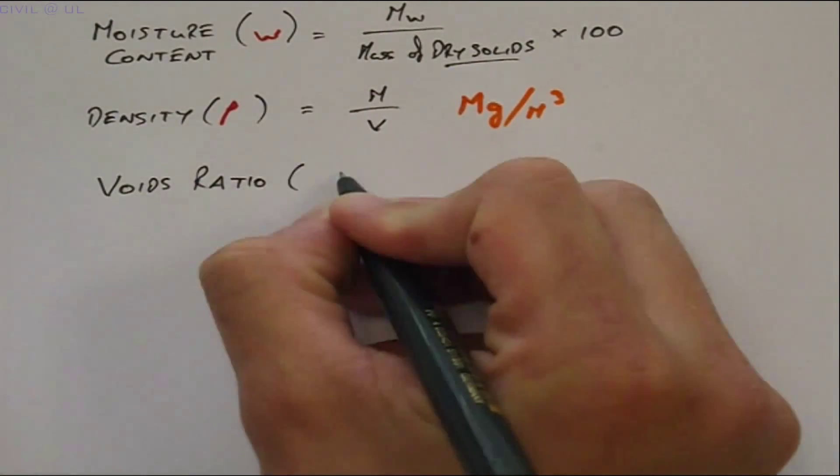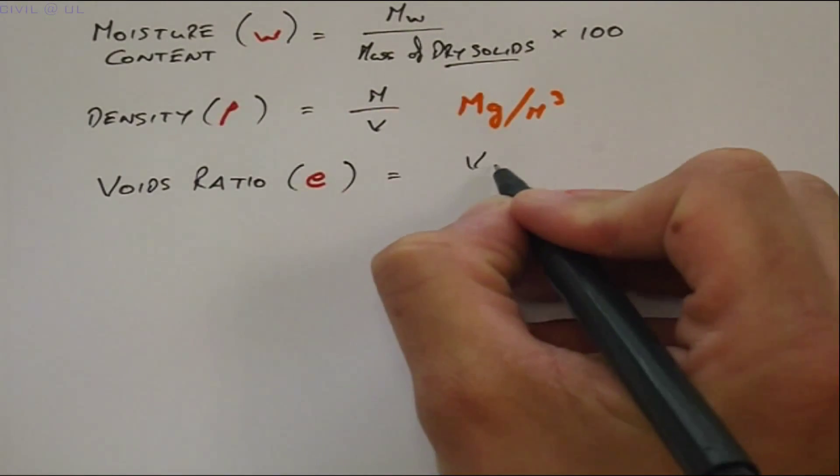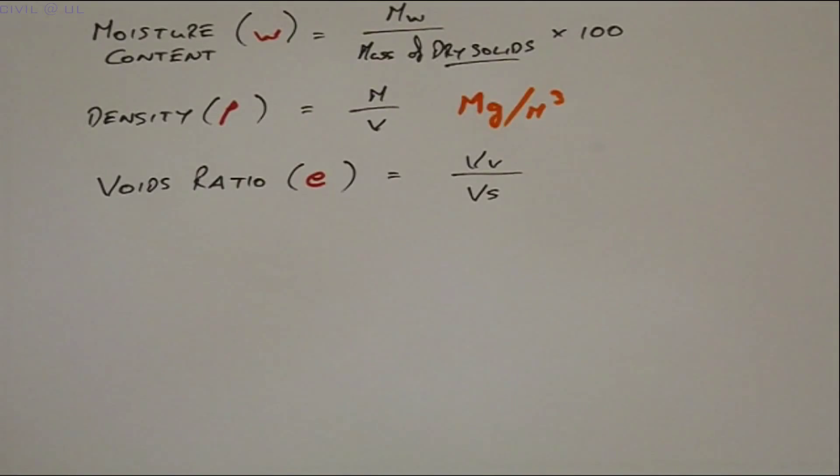The voids ratio E is equal to the volume of the voids divided by the volume of solids.